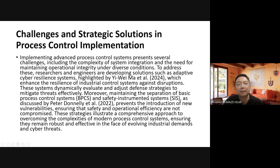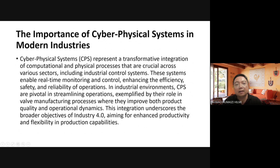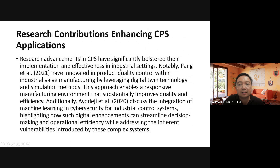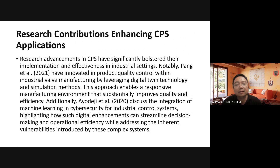The last system is the Cyber Physical System (CPS), which represents a transformative integration of computational and physical processes that are crucial across various sectors. This system enables real-time monitoring and control, enhancing the efficiency, safety, and reliability of operations. Recent research by Pang et al. innovated in product quality control within industrial and manufacturing settings by leveraging digital twin technology and simulation methods, enabling a responsive manufacturing environment that substantially improves quality and efficiency.